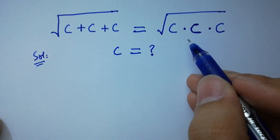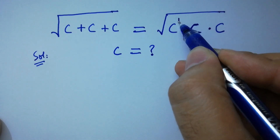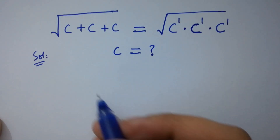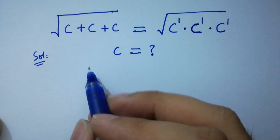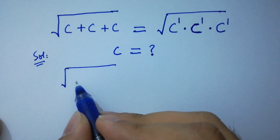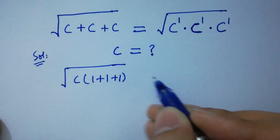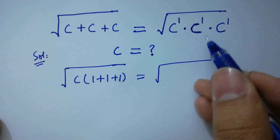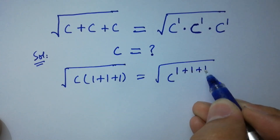On the right hand side, we can write c to the power 1, c to the power 1, c to the power 1. On the left hand side, c can be common, so we have c times (1 plus 1 plus 1). On the right hand side, since the base is the same, we have c to the power 1 plus 1 plus 1.